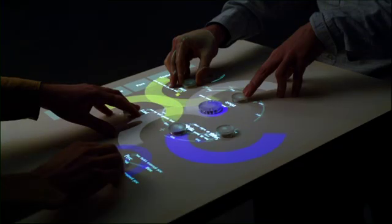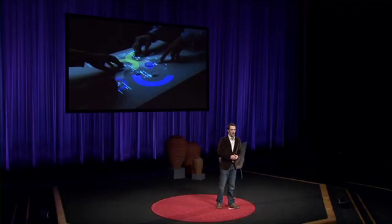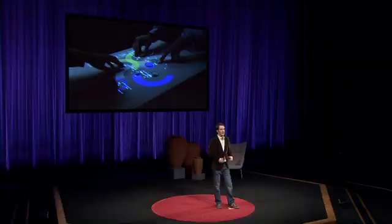So to explore this idea, I built the Sense Table, which is a sensing platform that tracks the positions of objects on top of it. And we've used it for a bunch of different kinds of applications. Here we're using it to perform music. Each of the different objects on the table represents a different audio track, and by moving them around we're creating music.